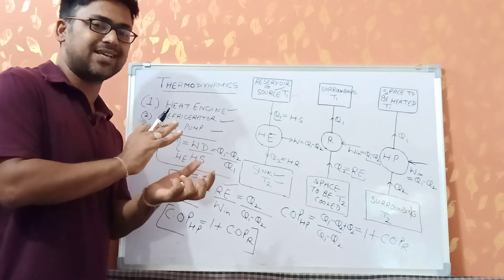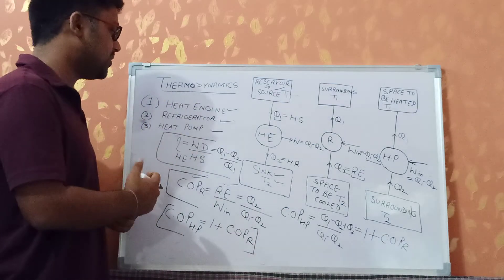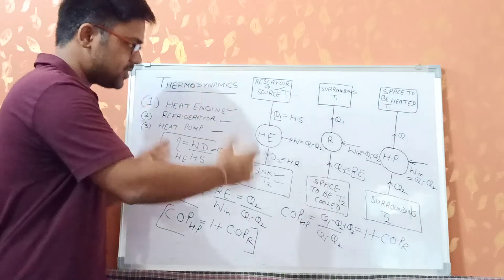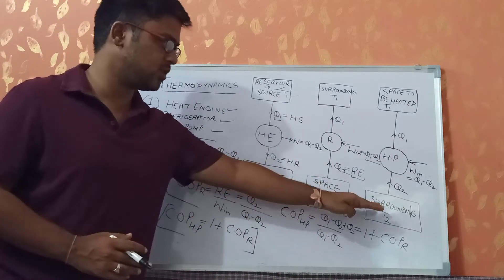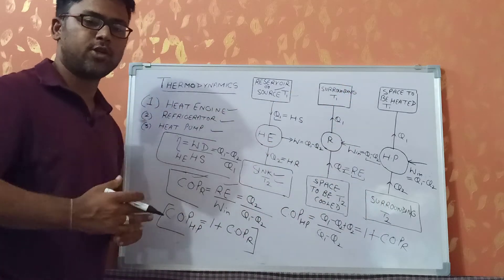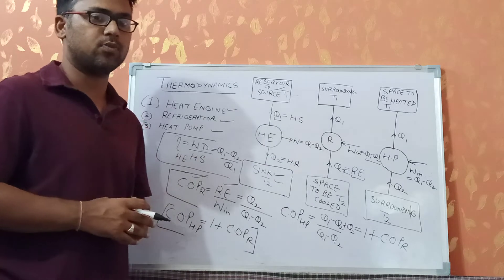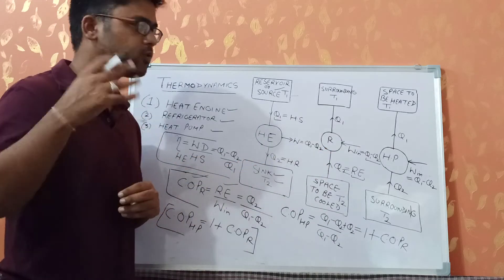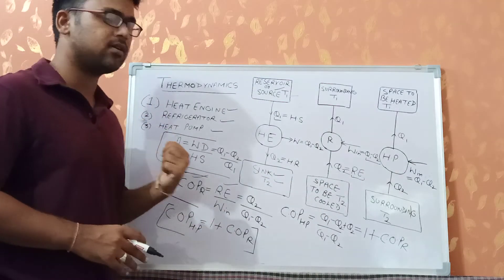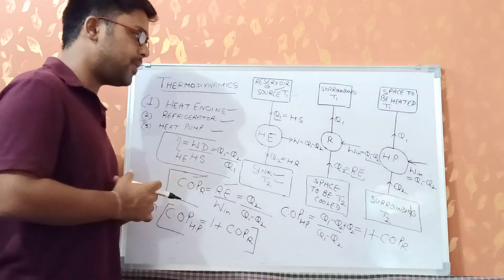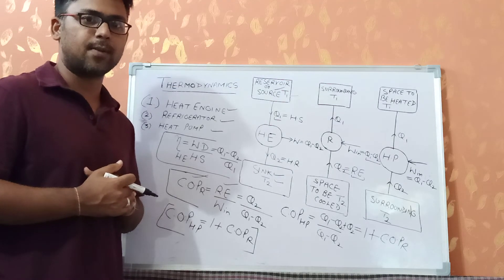So to summarize: the heat engine transfers heat from higher temperature to lower temperature producing work output. The refrigerator and heat pump both transfer heat from lower to higher temperature, which is not naturally possible, so work input is required in both cases. The refrigerator is used for cooling purposes whereas the heat pump is used for heating purposes. If you have any doubts, write in the comment section and please subscribe to the channel.